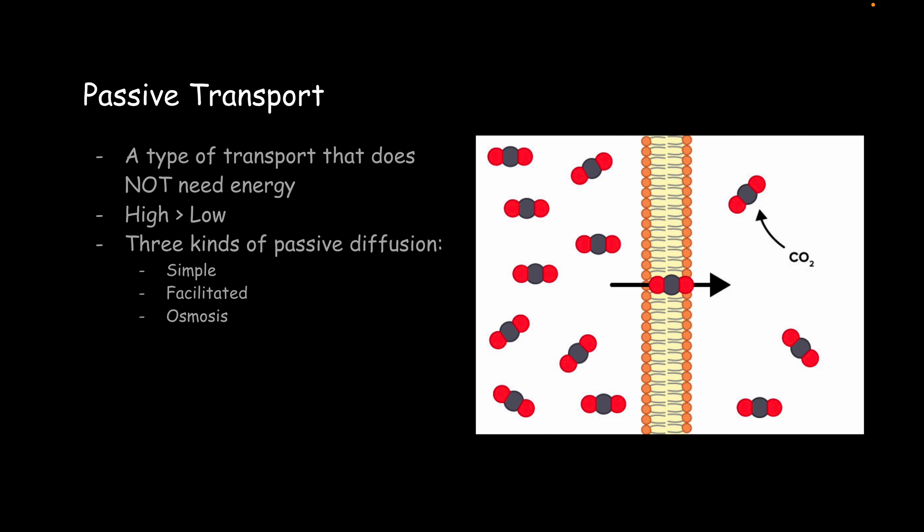So, we're going to start with passive transport first. There's two types. There's passive and active. First, we have passive. This is high to low and does not need energy. And there's three kinds. We have simple, facilitated, and osmosis.